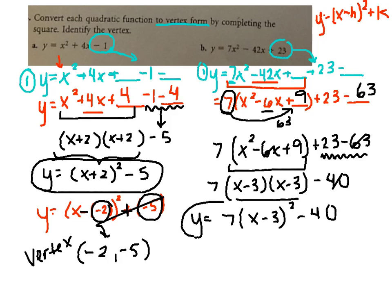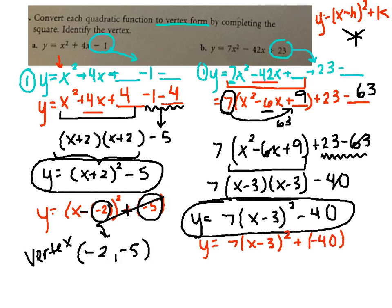And they asked for the vertex after you write it in vertex form. And the vertex up at the top needs to be x minus a number and then plus k. So we have x minus already. But we need to write it as plus and negative 40. So our vertex is this 3 and then negative 40.